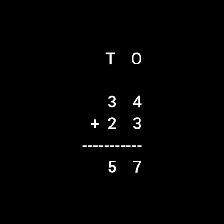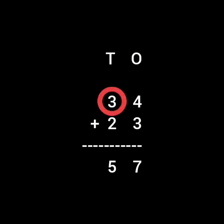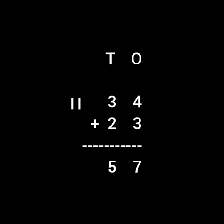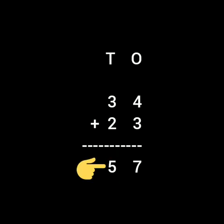Now let us see the 10's column. It is 3 plus 2. On one hand you have to take out 3 fingers, and on the other hand you have to take out 2 fingers. Now let us count them together: 1, 2, 3, 4, and 5. So what will you write there? 5. So the answer will be 57.